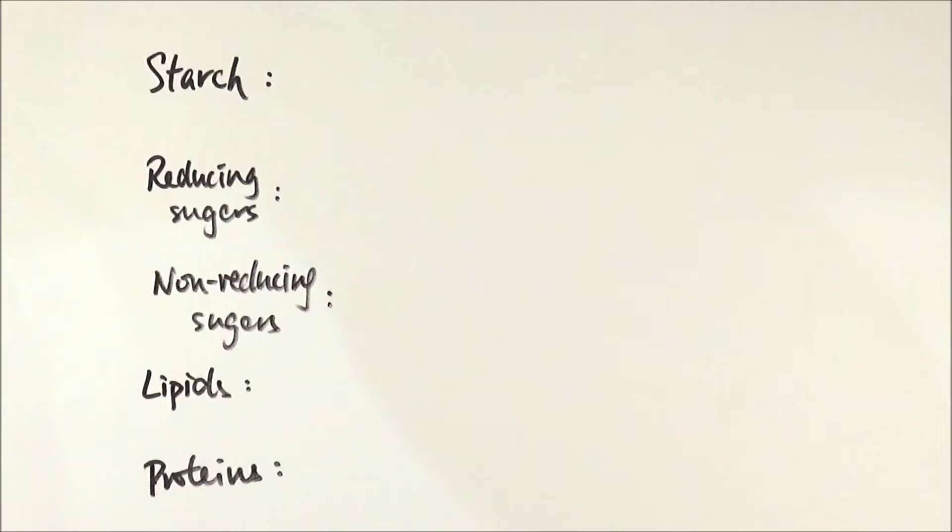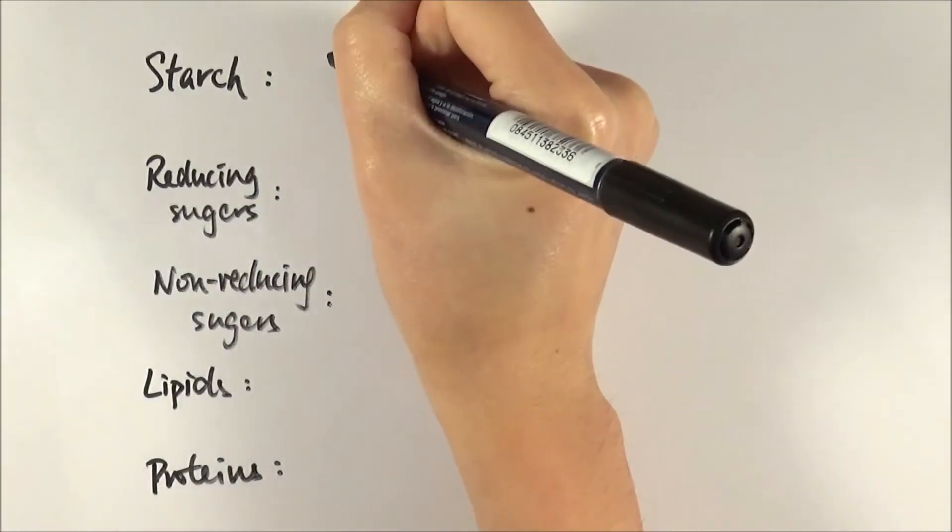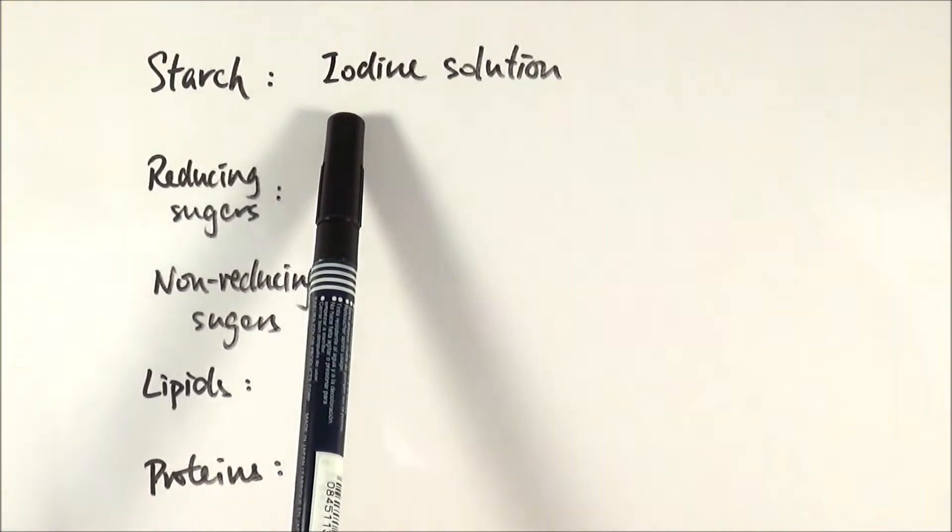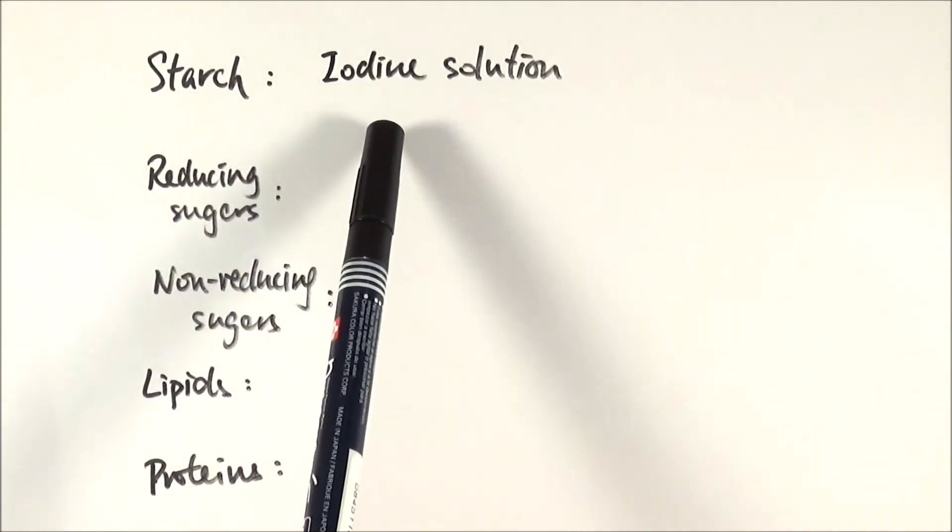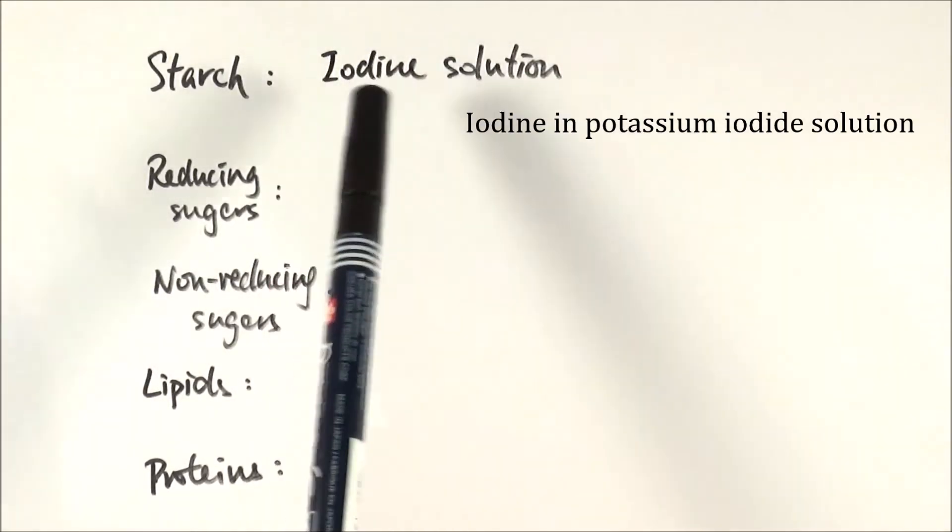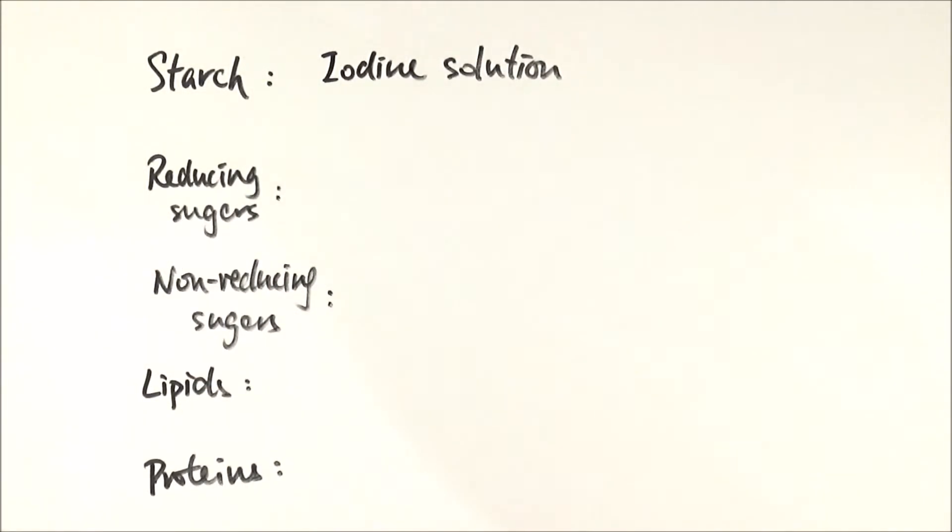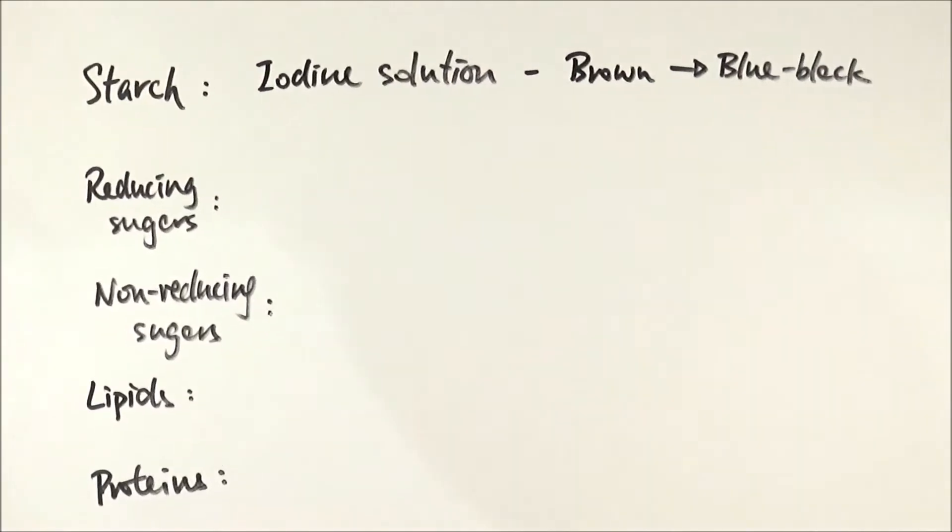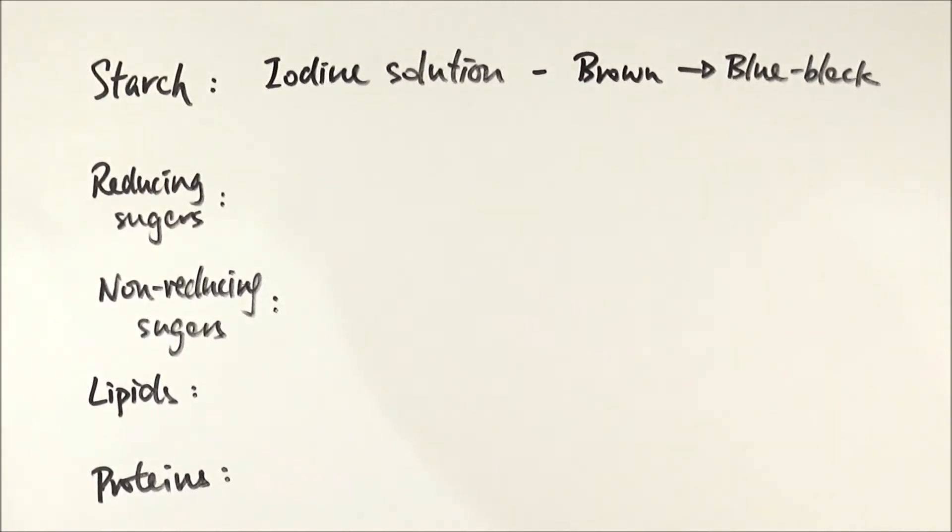First of all, starch. Most people will know this from GCSE. You use iodine solution to test for starch. Note that you have to say the word 'solution' because if you just say iodine, it doesn't actually work. It's actually iodine dissolved in potassium iodide solution that makes up the whole reagent. If it's a positive test, it will change from brown to blue-black. Foods such as pasta, rice, and potatoes—all the starchy foods—will definitely show this positive result.